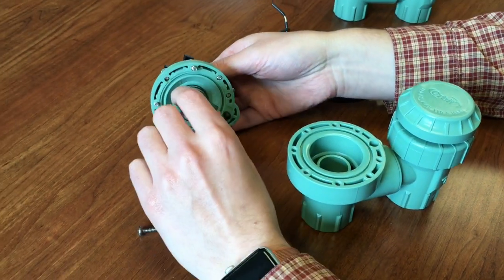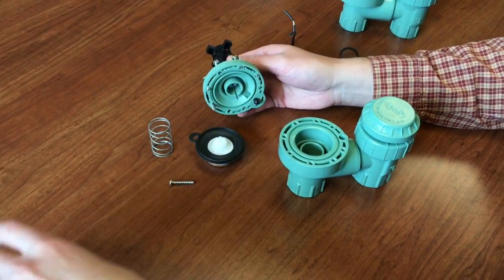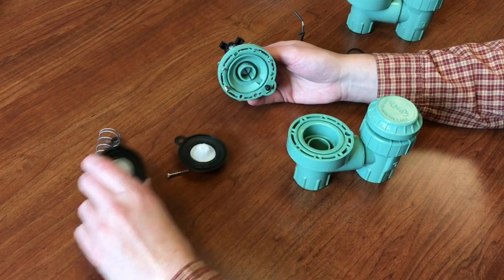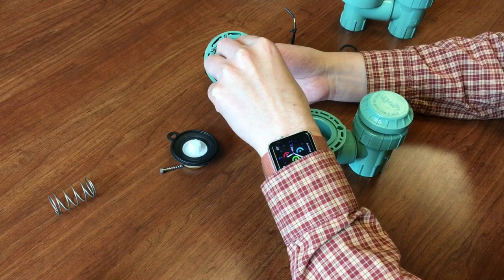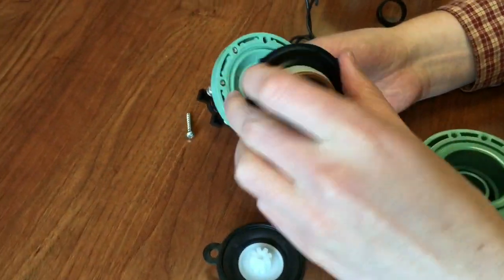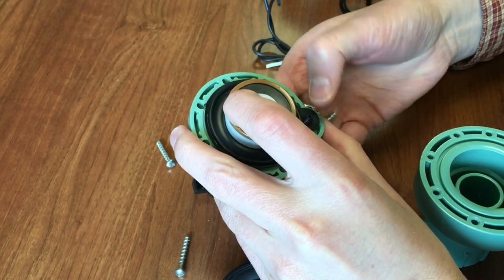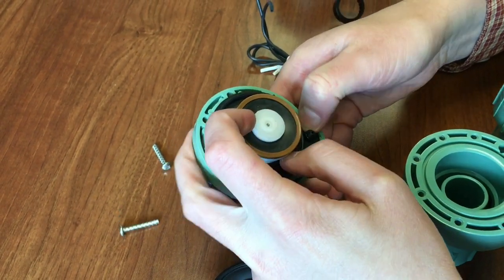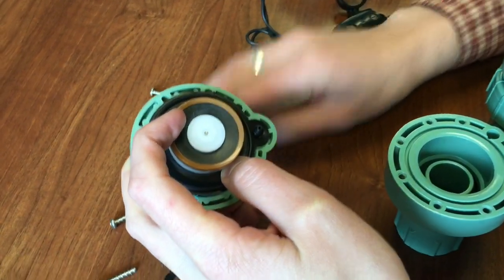So to replace any of this stuff, the first thing you could replace is the diaphragm. So here we have a replacement diaphragm. You would need that, and then you'll need the spring that goes underneath it. Just seats in there like that, and the diaphragm goes on like this. Just make sure that the actual tab here fits into that flow control lever.